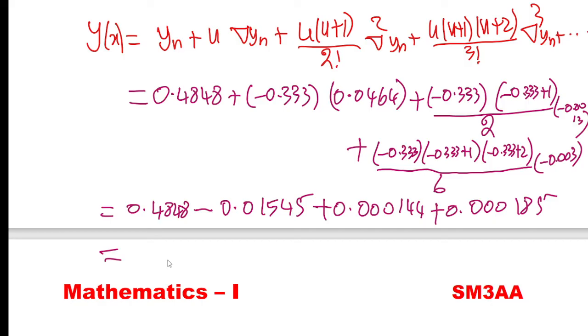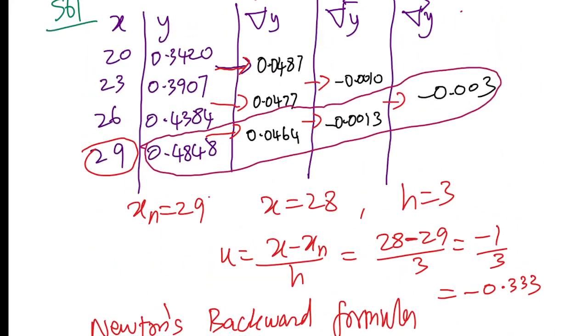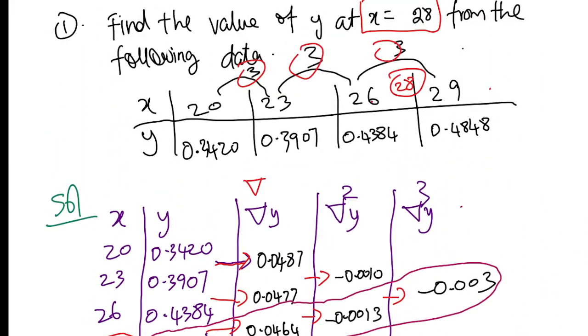Plus 0.00144 plus 0.00185. If you add it, it comes to 0.4695, so the answer is 0.4696. So if you do a point, you will have 3-4 digits. This is your answer 0.4696. The answer is right - check the answer already. So if you go to question, x value is 28. You can mark it.